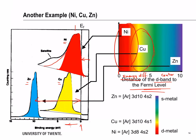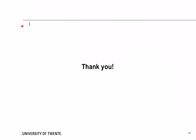The reason this is so important is that the electronic structure of the isolated atoms already tells you about the electronic structure of the solid material. In the case of zinc you have completely filled s and d-bands, in copper a partially filled s-band, and in nickel a partially filled d-band. Depending on the energy difference between the center of the d-band and the Fermi level, you have a trend in catalytic activity that varies across the periodic system.